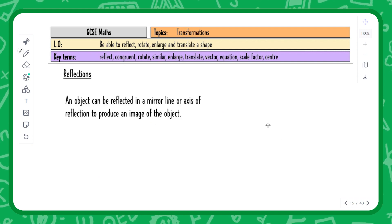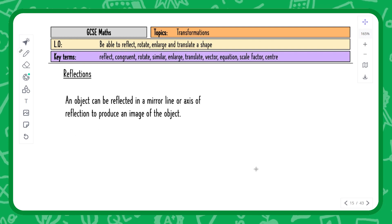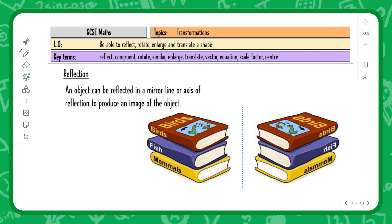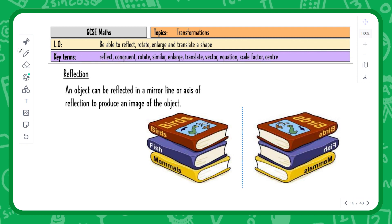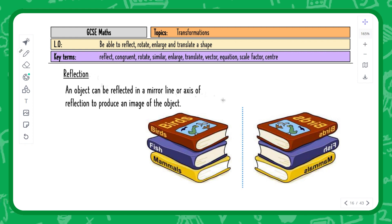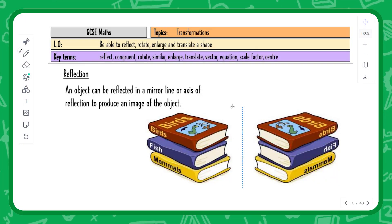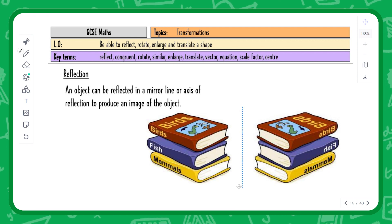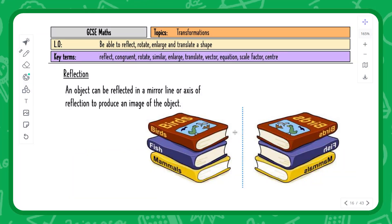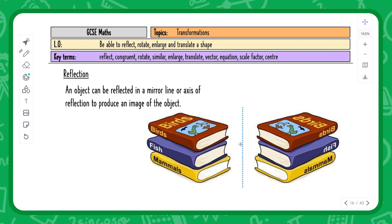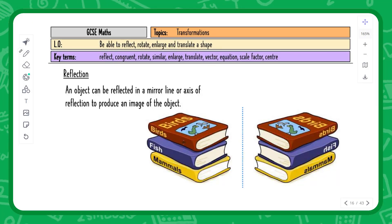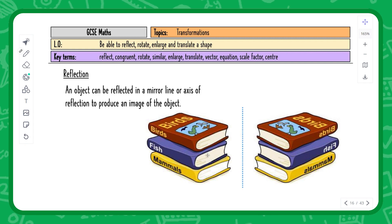The first of the four transformations is reflection. An object can be reflected in a mirror line or axis of reflection to produce an image — note that the letters appear backwards in a direct reflection. In an exam, you always need to state it's a reflection and give the equation of the mirror line. For a vertical line it's x equals something; for a horizontal line it's y equals something.